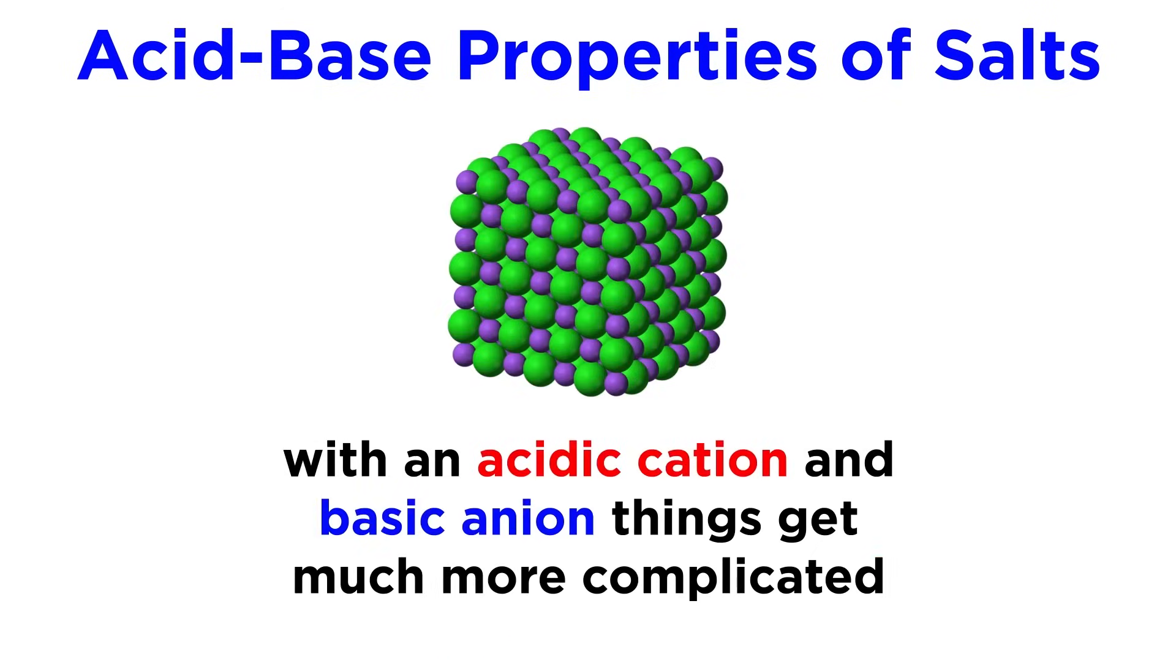Things get much more complicated when both the cation and anion in a salt have acidic or basic properties. In such a case, we would have to compare the Ka of the acid and the Kb of the base to see which would dominate in solution, and the closer they are to being equal, the closer the solution would be to neutral pH.